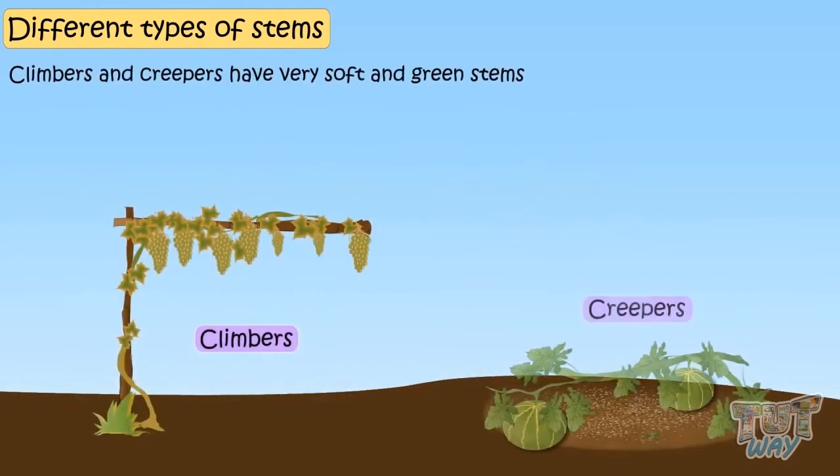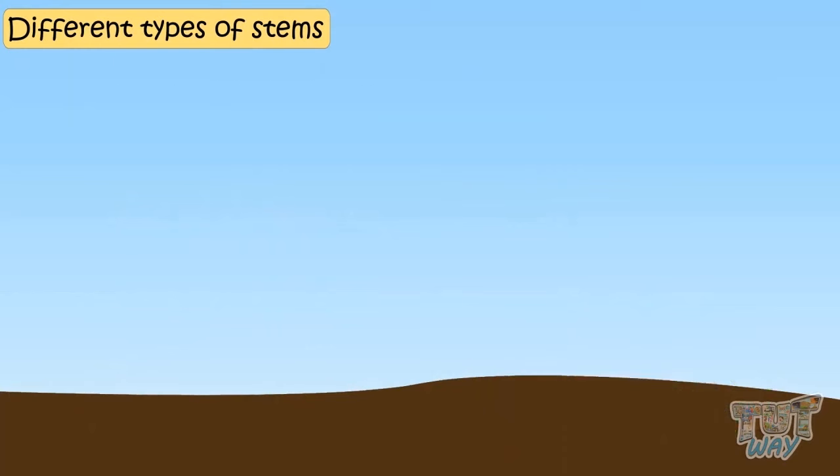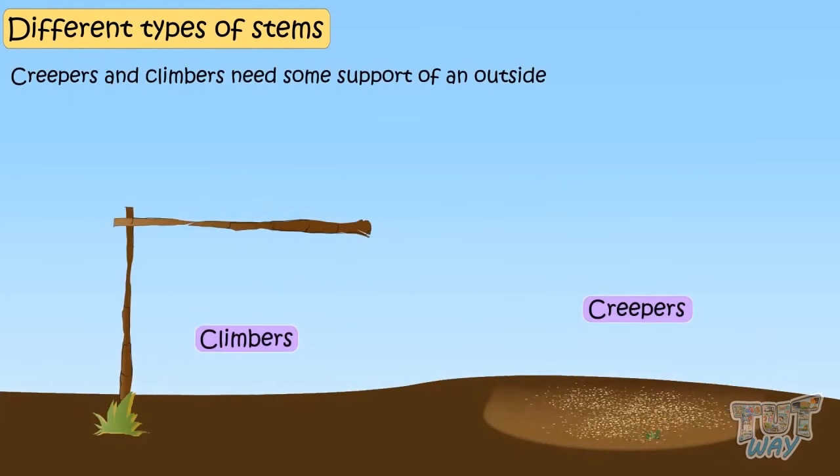Climbers and creepers have very soft and green stems that can't keep the plant upright. Creepers and climbers need some support of an outside object to climb up or crawl along.